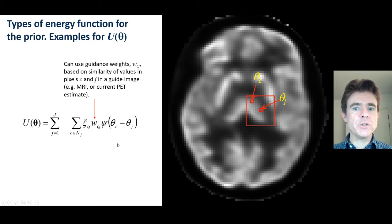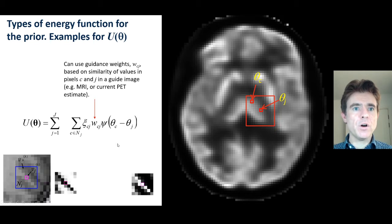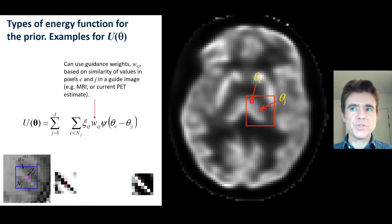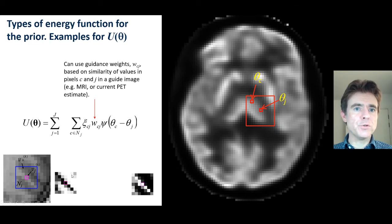I'll give the illustration for the case of an MR patch. This doesn't correspond to the patch shown in the PET image, but imagine it is centred on the same region. We compute the set of values looking at the square difference between the values in the MR image, for example a T1-weighted image.